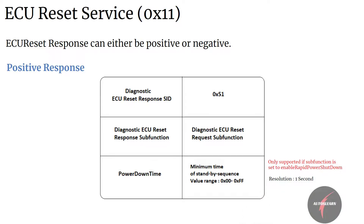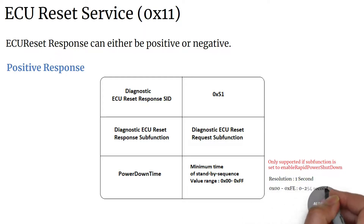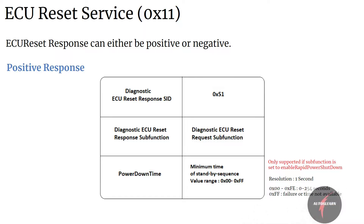The resolution of the power down time parameter is one second. The supported range of values is from 0 to FE, which is 0 to 254 seconds, and FF indicates failure or time not available.